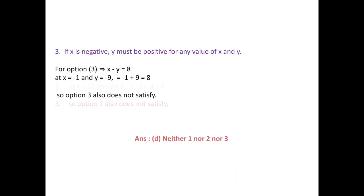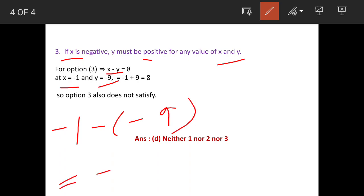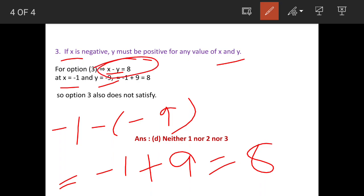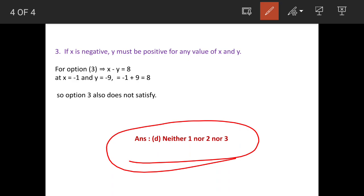The third option says: x is negative and y must always be positive for all values of x and y to get x minus y equals 8. Let's try: x equals negative 1, and instead of keeping y positive, we take y as negative 9. So negative 1 minus negative 9 equals negative 1 plus 9, which is still 8. We are able to get this result even when the statement is not complied with, so this statement is also wrong. Therefore, the answer is option D — neither statement 1, 2, nor 3 is correct. Thank you very much for watching.